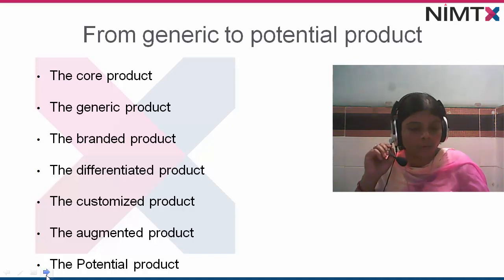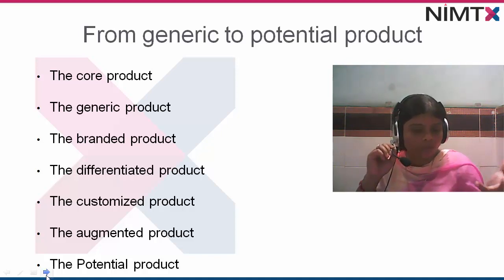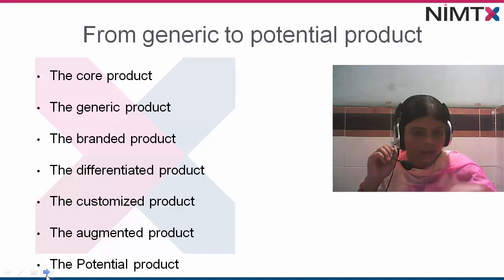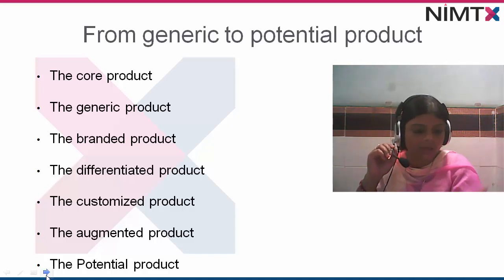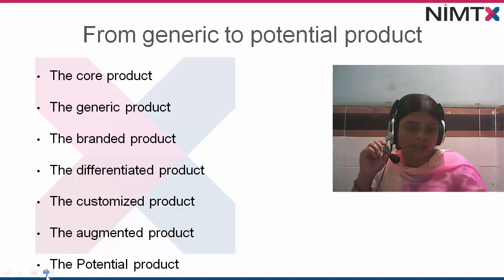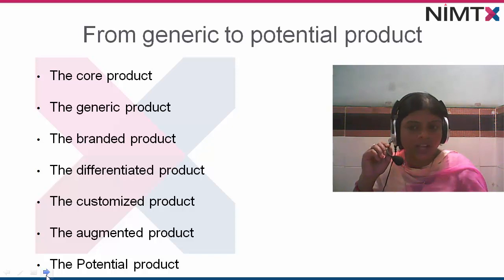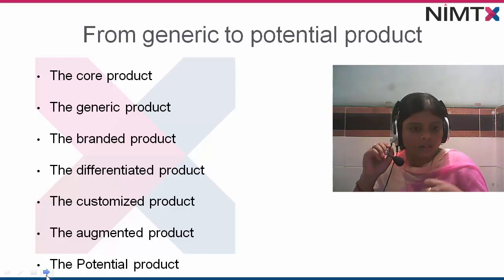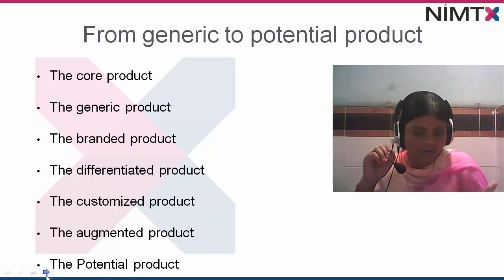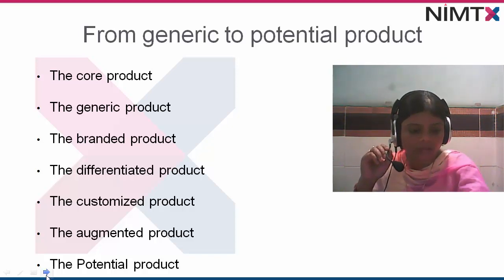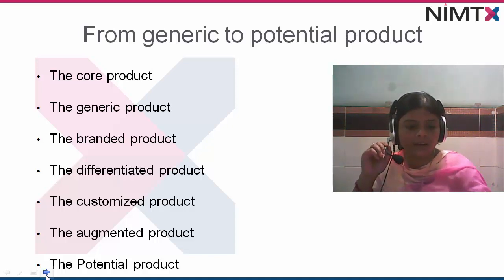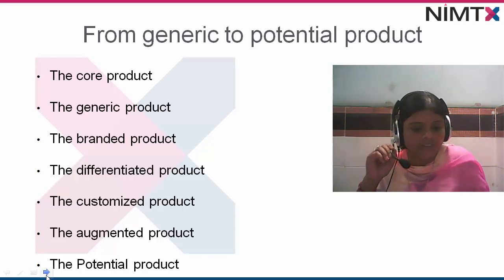If you are talking about the generic product, every product has competition from other products. Every product has a competitor. The generic product is unbranded and undifferentiated — commonly, you can take the example of rice, bread, and clothes.